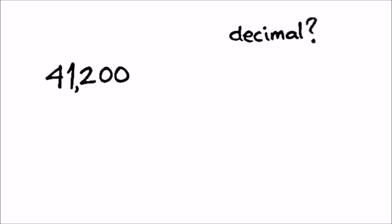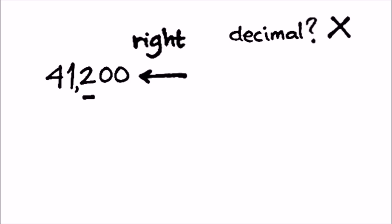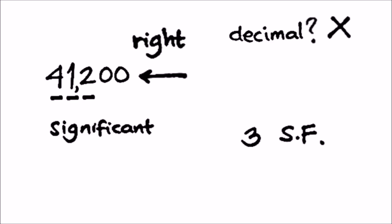How about 41,200? Is there a decimal point? No. So here we start from the right and move to the left. It hits the first non-zero digit number — that's 2. So therefore the rest to the left is significant as well, including that number. So there are 3 significant figures.